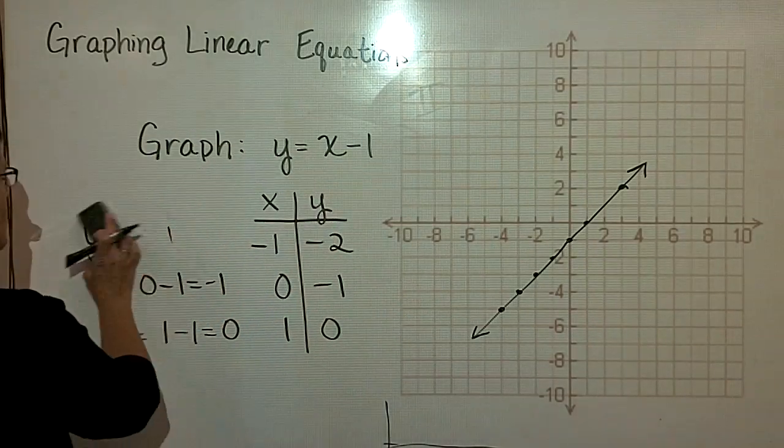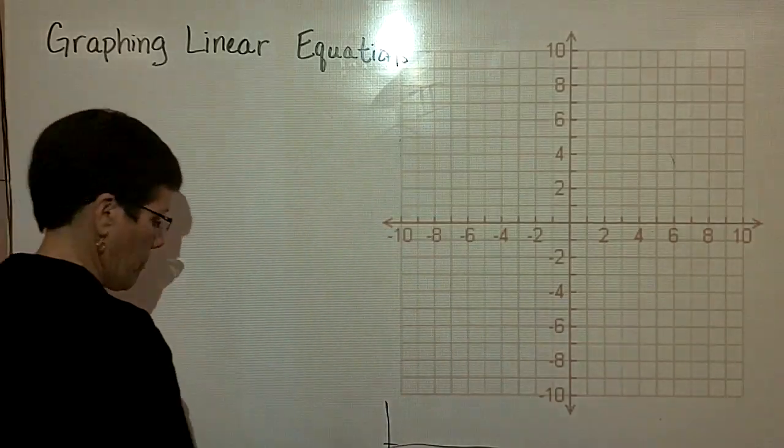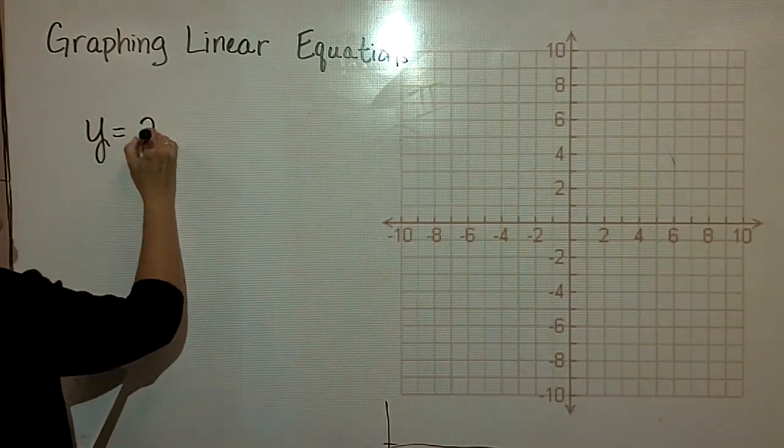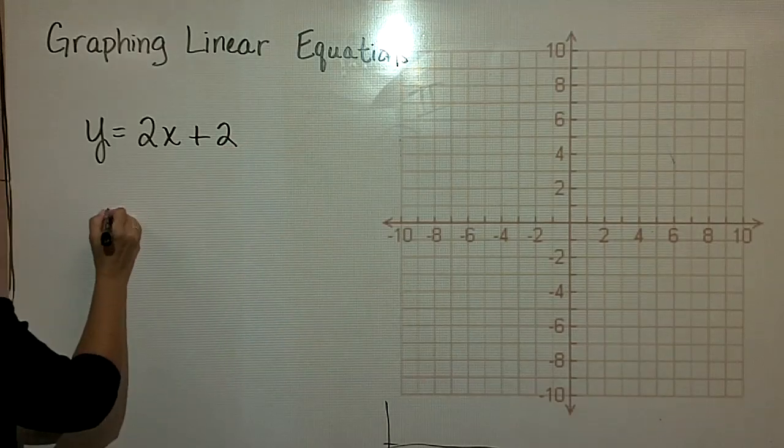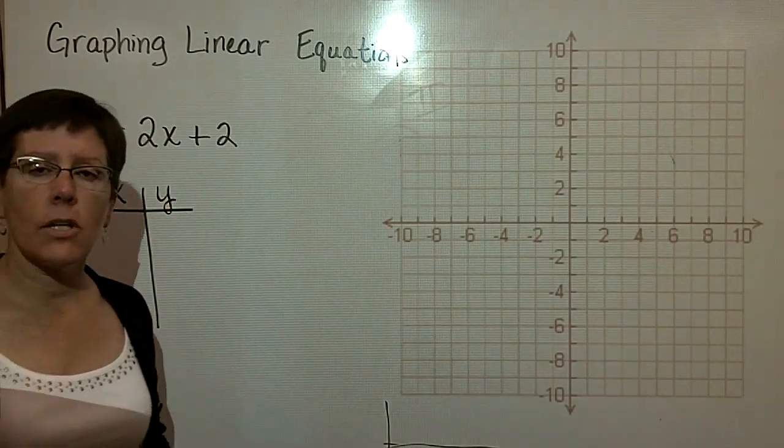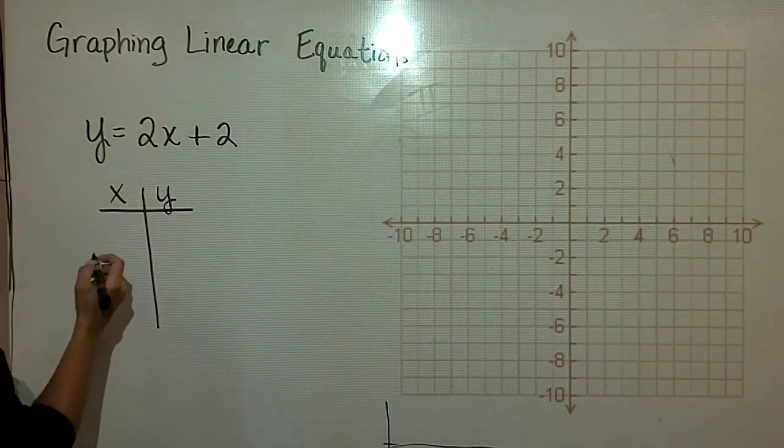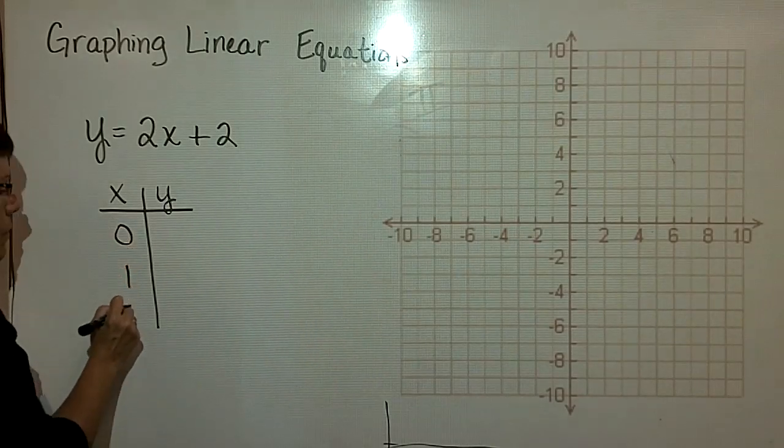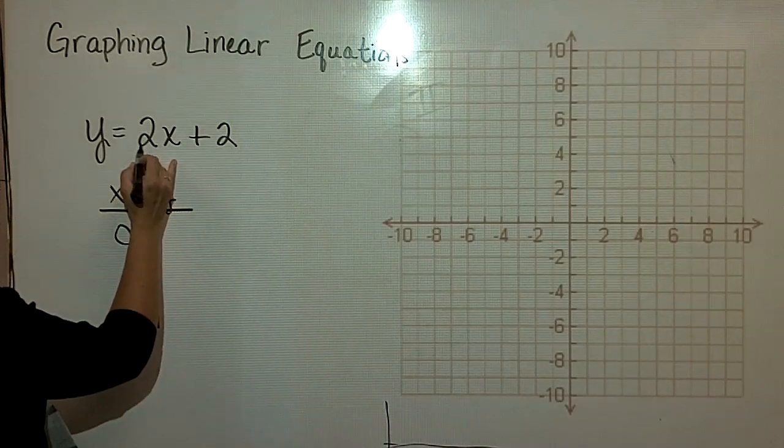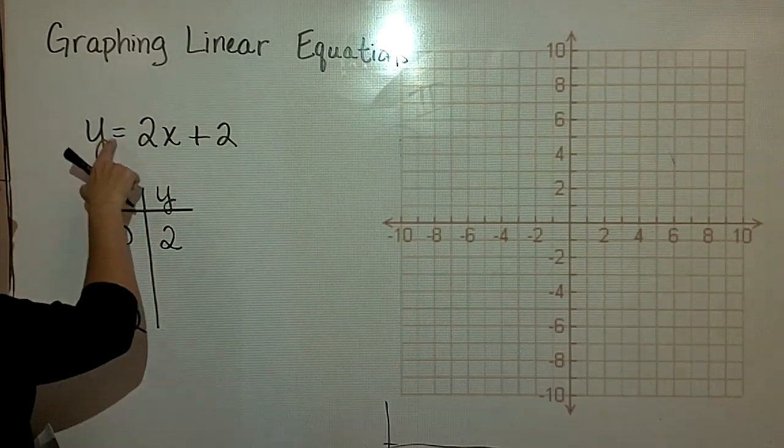Let's do another one. y equals 2x plus 2. And I'd like to put some values in for x. I would just like to illustrate to you that it's not necessary to always use a negative 1, 0, and 1. Although I like to do that sometimes, you can use any values you'd like. So if it would be easier for you to use 0, 1, and 2 for your x values, that would be just fine. Because often you can just say to yourself, 2 times 0 is nothing, and then I add 2 to it, and I get 2.